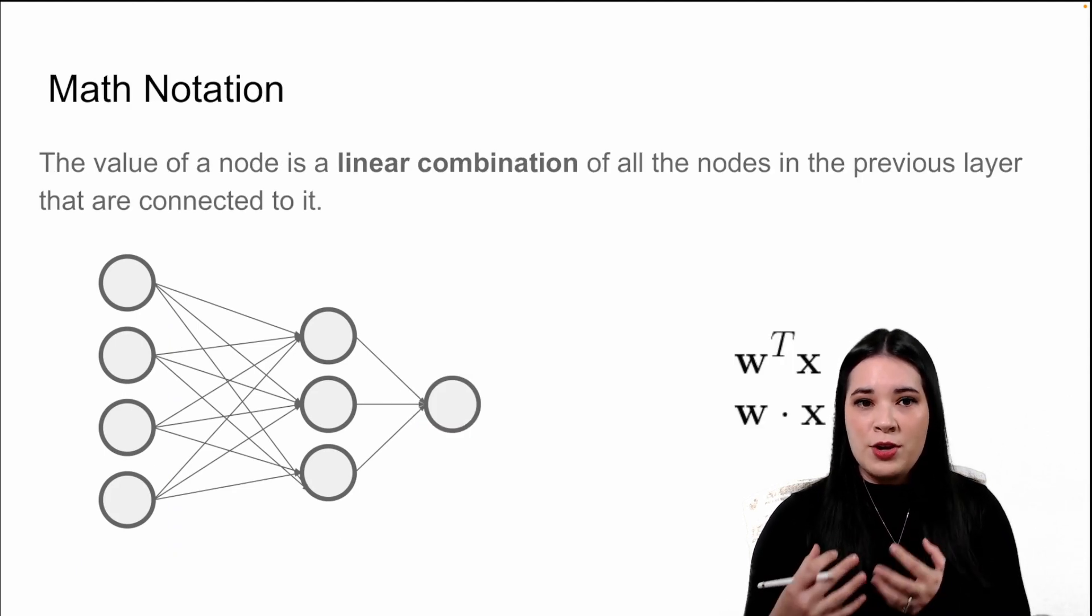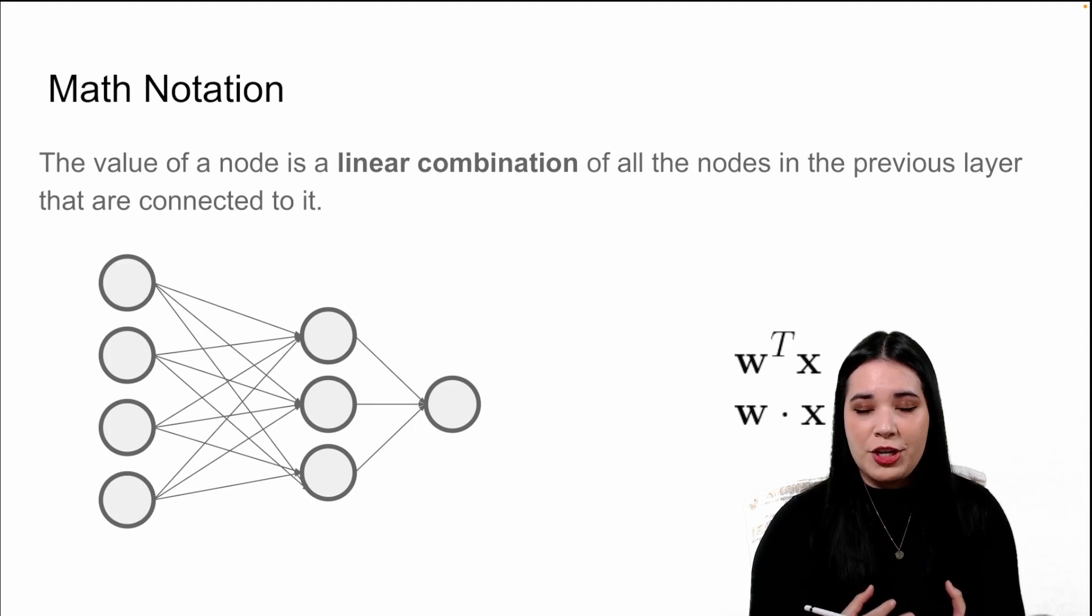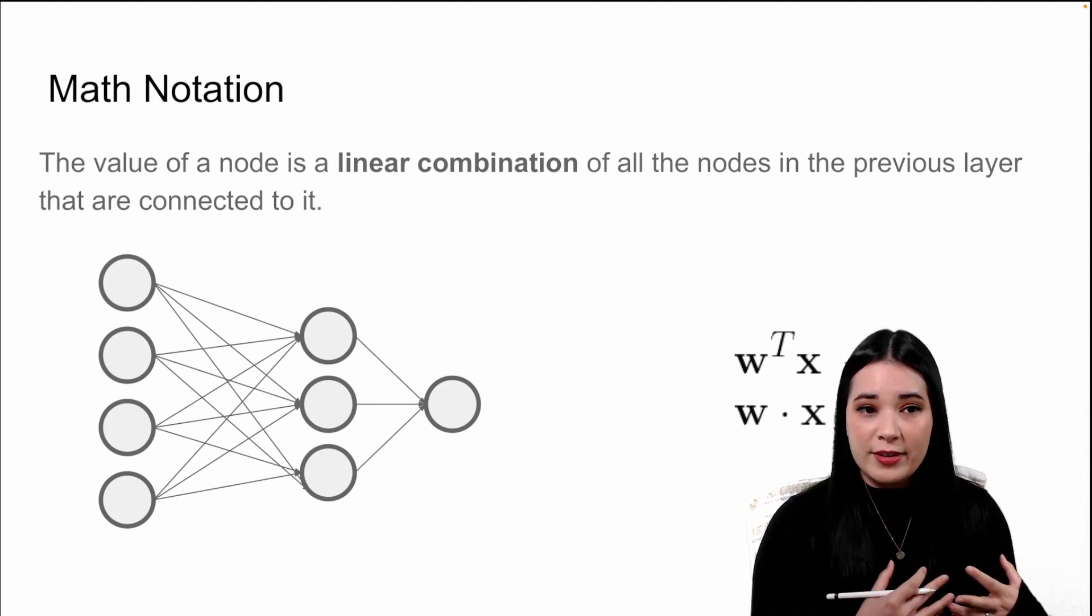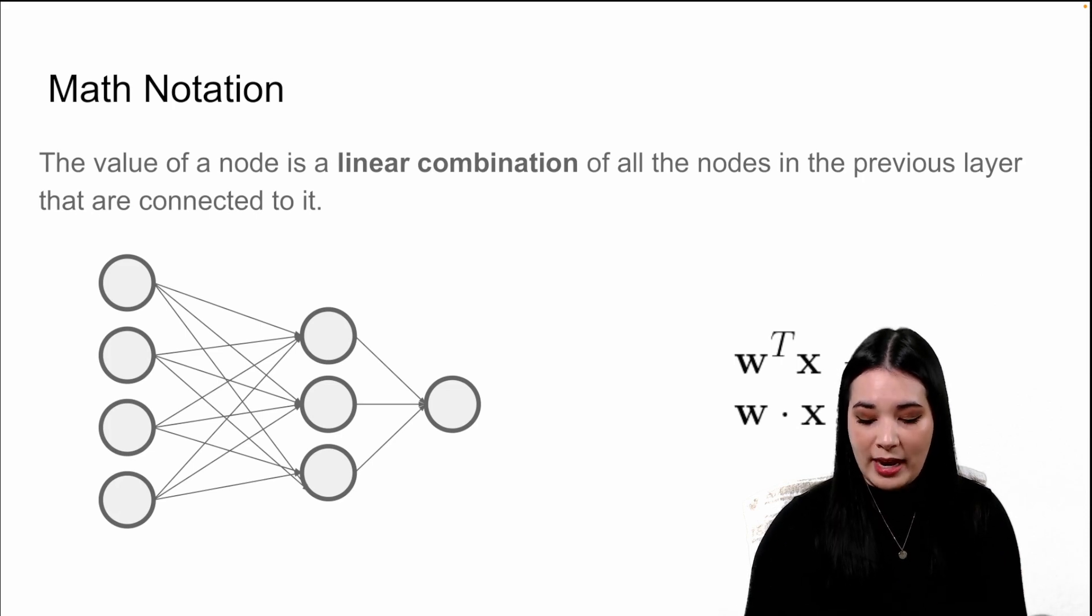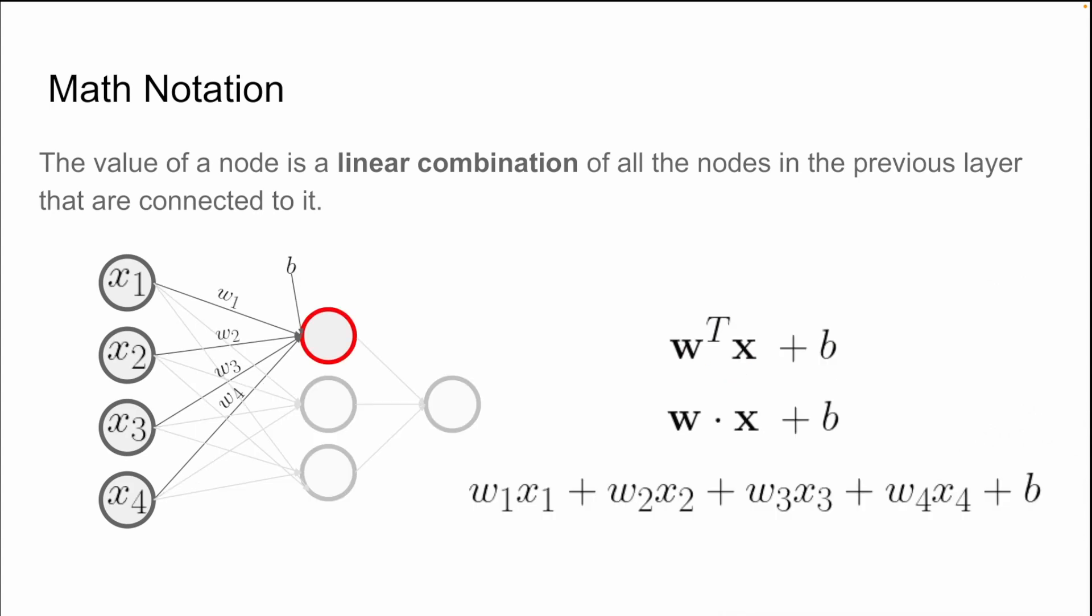To review a little bit of math notation, the value of a node is a linear combination of all the nodes in a previous layer that are connected to it. We typically will use this type of notation, where the weights are put in a vector times the input values plus a bias. We can also see it in this dot product form.